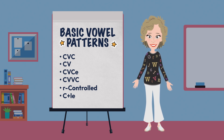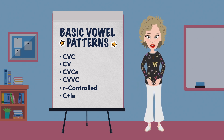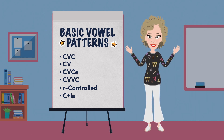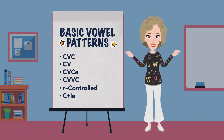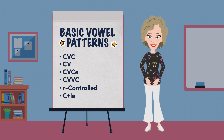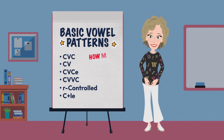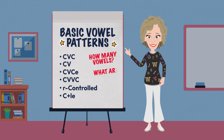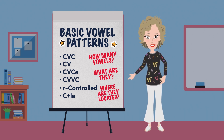We should teach kids that when they see an unknown word, they should ask themselves three questions to help determine what sound to give each vowel: How many vowels are in the word? What are they? And where are they located in the word?